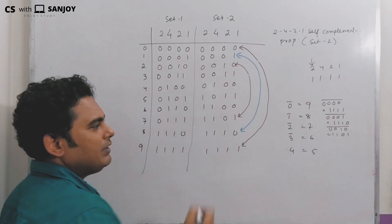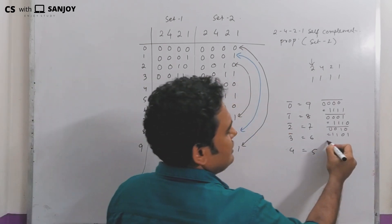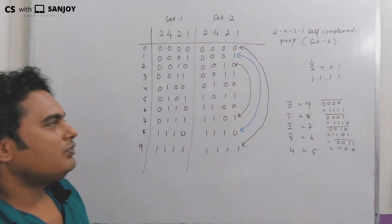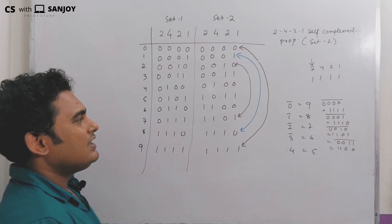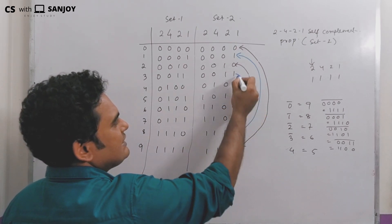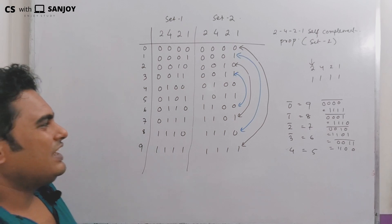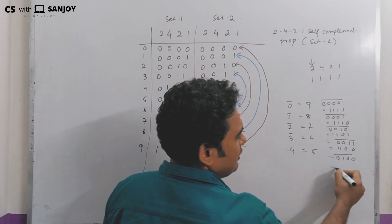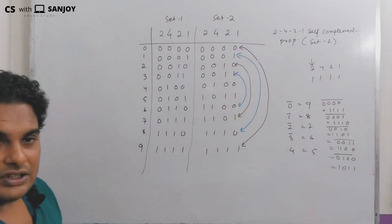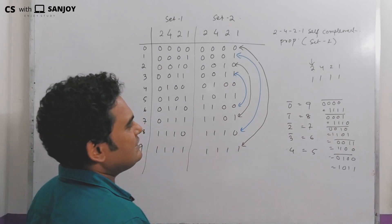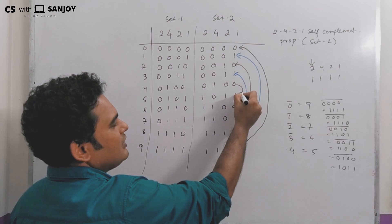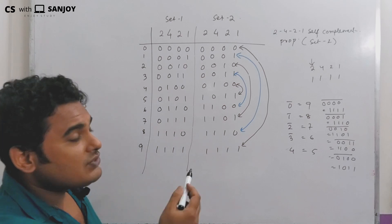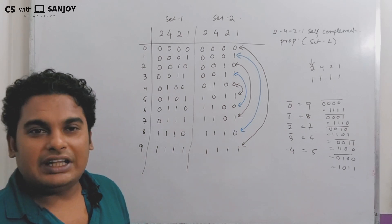For 3: its value is 0011. If I complement it, I get 1100, which is 6. So the complement of 3 is 6. For 4: its value is 0100. If I complement it, I get 1011, which is the Set 2 value of 5. So 4 and 5 are complements of each other. This is the self-complementing property of 2421. That's why we also call this code a self-complementing code.